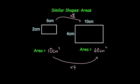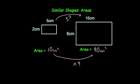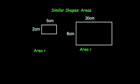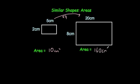So whenever the scale factor was 2, we multiply the areas by 4. Whenever the sides were multiplied by 3, we multiply the areas by 9. Let's have a look at what happens whenever we multiply the sides by 4. To get from 5 to 20 you'd multiply by 4, so the scale factor of enlargement for the sides is 4. 2 times 5 is again 10 centimetres squared and 8 times 20 is 160 centimetres squared, so the areas are 16 times bigger.